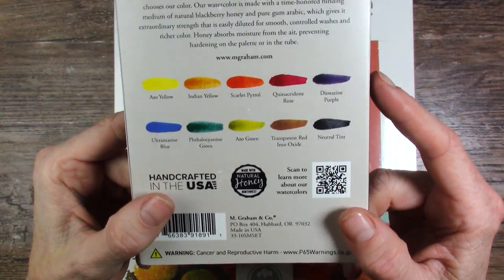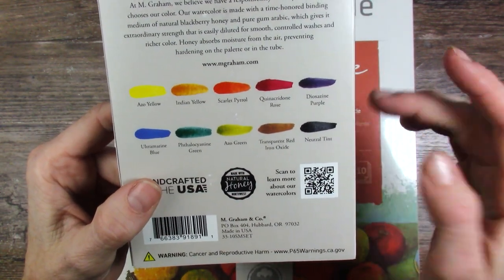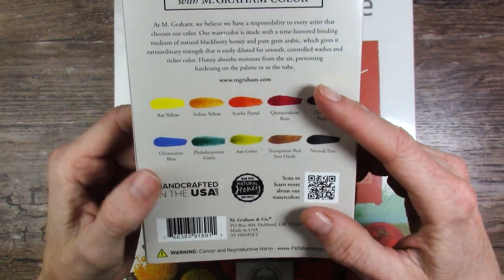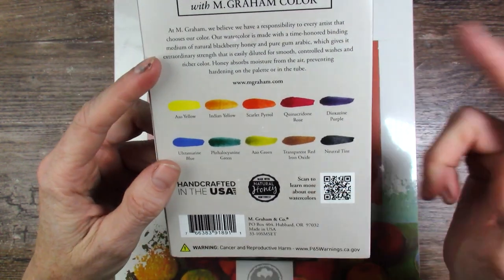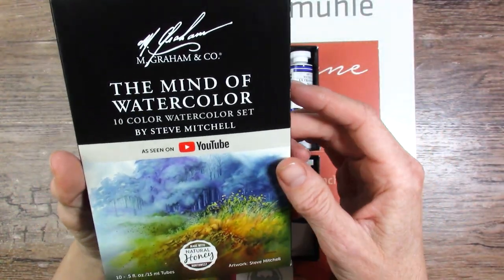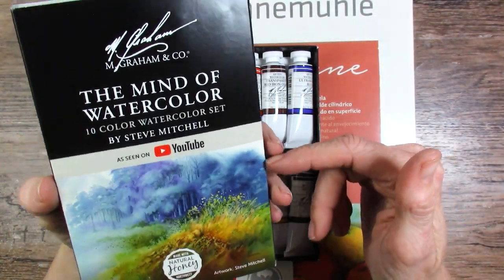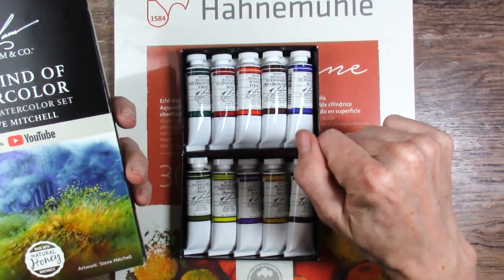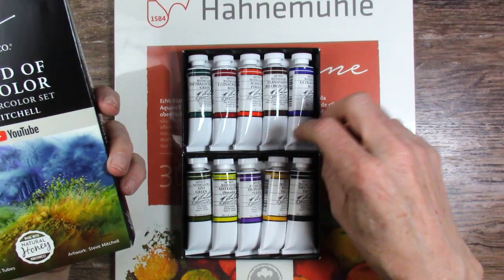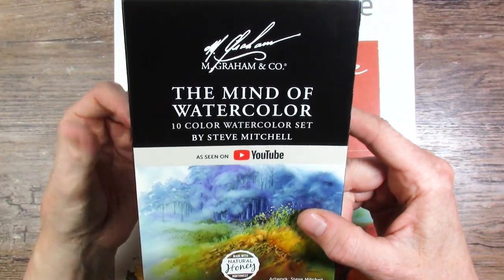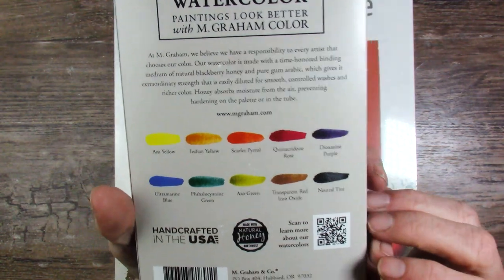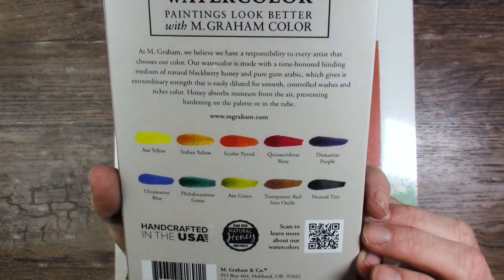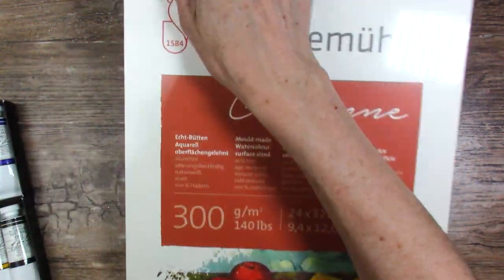Steve Mitchell from the Mind of Watercolor has chosen and they put together this set with him and it was a collaboration with Wet Paint Art. And it's a company I've mentioned before because they are who I ordered the Hahnemühle cotton sketchbooks from. They are in the United States and this is the only place you can get this particular set. But these colors are spectacular. I can't wait to try them out. Well let's go ahead and see what this paper looks like. We might as well.